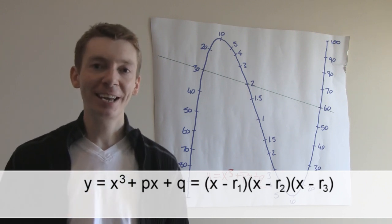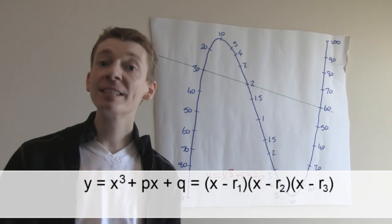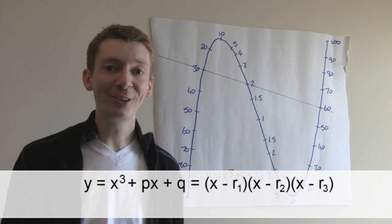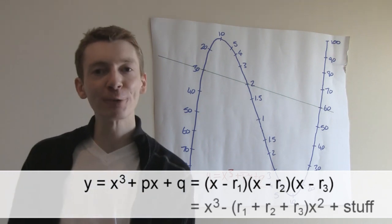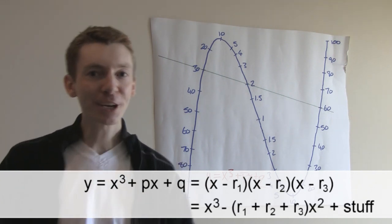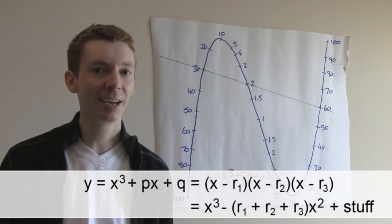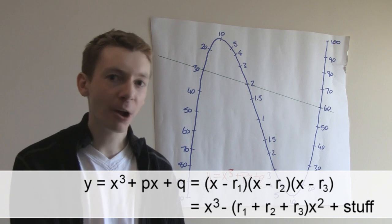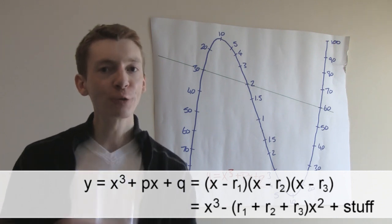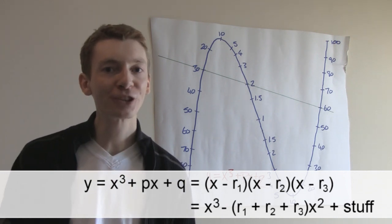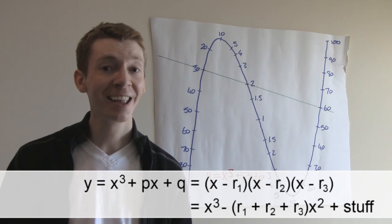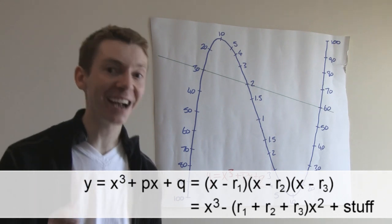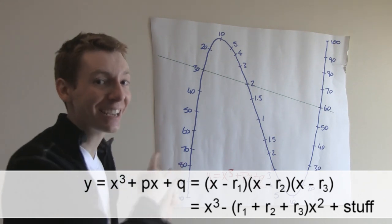Now there are a couple of things to notice here. First of all, when x is equal to a root, this whole thing is equal to zero. And the other thing to notice is, if we expand the right hand side and then compare it with the left hand side, have a look at how many x squared terms we've got. On the left we've got zero x squared terms. On the right we've got r1 plus r2 plus r3. That means the three roots add up to zero. And it's this fact that turns it into a calculator.